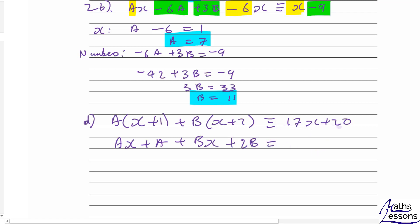Let's equate all the x's - we've got ax, bx, 17x. So for all the x's we've got a plus b must equal 17. We look at the numbers - we've got a, 2b, and 20, so we get a plus 2b equals 20.